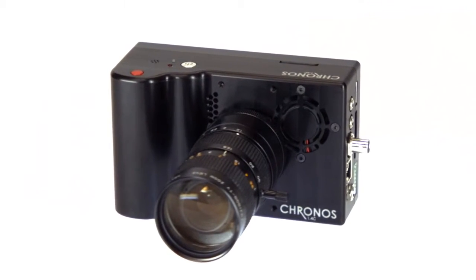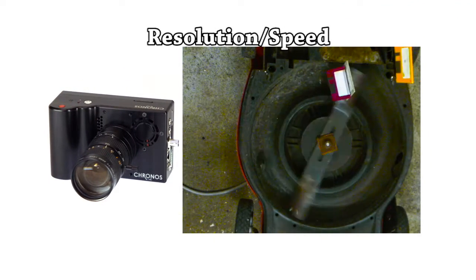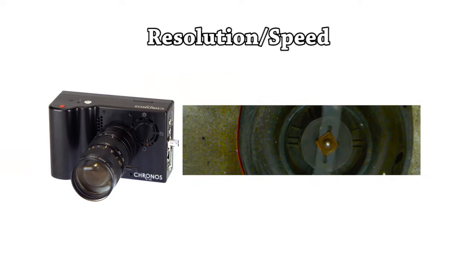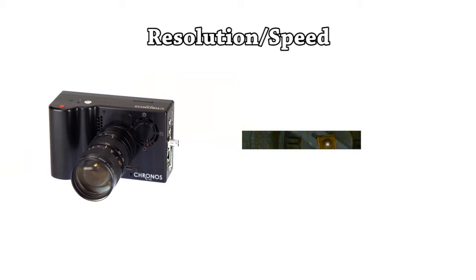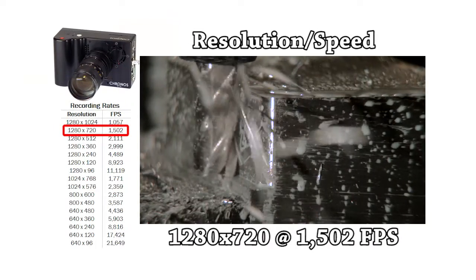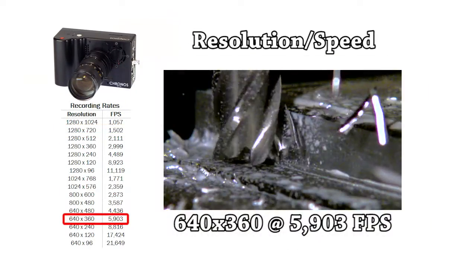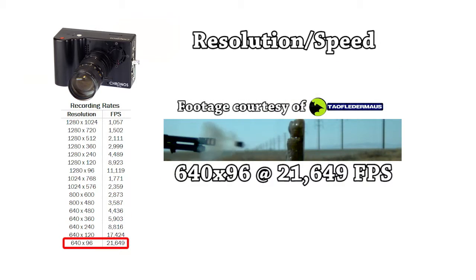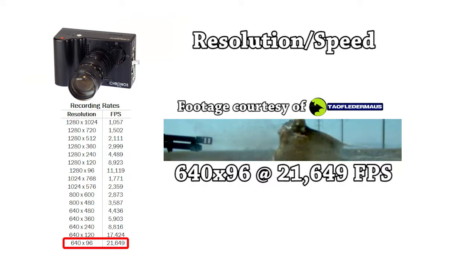Kronos 1.4 is a 1.4 gigapixel per second throughput high-speed camera capable of resolutions up to 1280 by 1024. Image size is adjustable in 16 by 2 pixel increments allowing increased speed at lower resolutions. Some examples include 720p at 1,500 frames per second, 640 by 360 at 5,900 frames per second, and 640 by 96 at 21,600 frames per second.